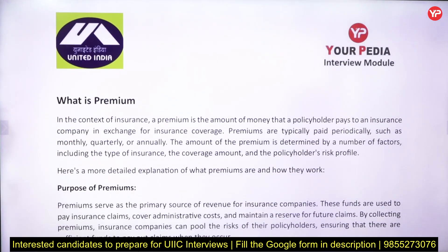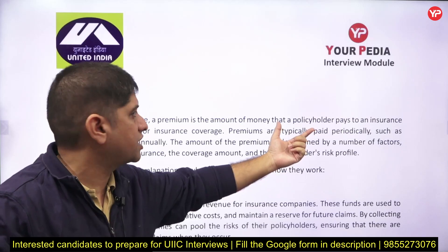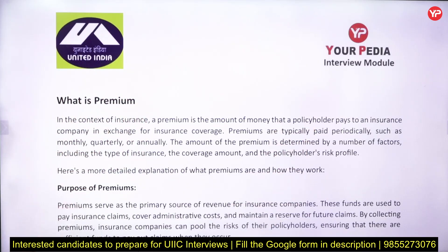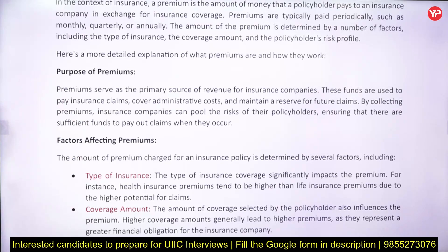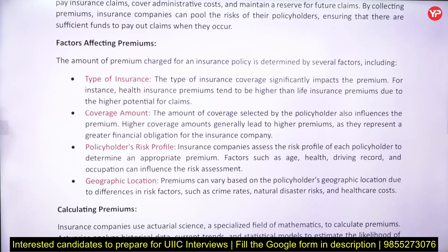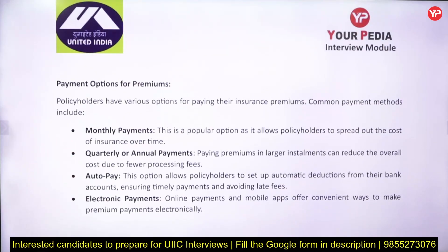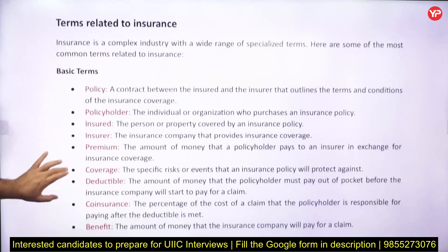Some important terminologies: premium is the amount of money which a policyholder pays to the insurance company to get insurance coverage, and it can be paid monthly, quarterly, or annually. The purpose is to spread payment over time rather than paying in one go. You should also be aware of the factors affecting premium calculation and the different payment options available.